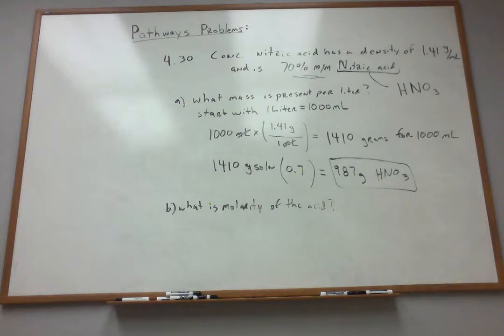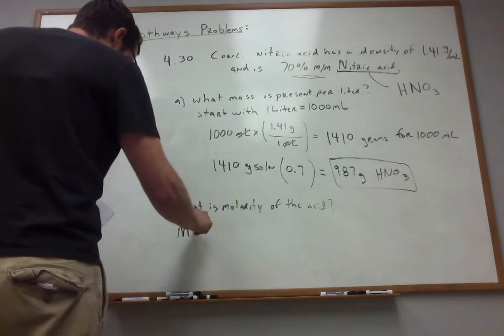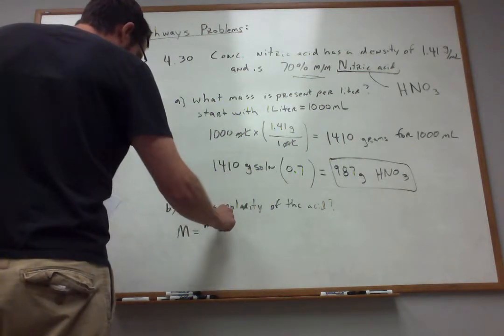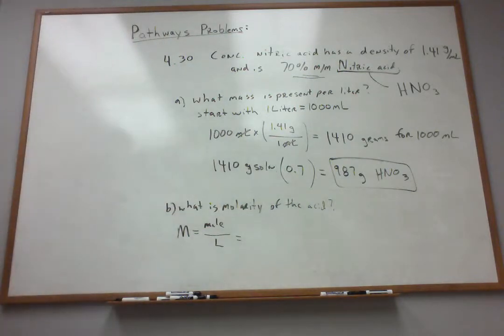So in this solution then, I expect 987 grams of HNO3. That's the mass that's expected. Now, part B, what is the molarity of the acid that's present? Well, I'm still considering my 1 liter and I remember that molarity is moles per liter.